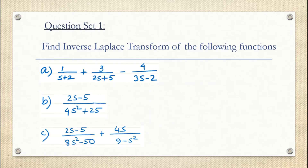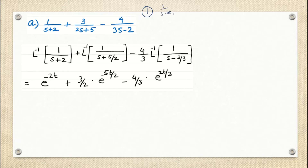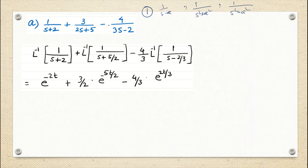The first question is to find the inverse Laplace transform of 1/(s+2) + 3/(2s+5) − 4/(3s−2). The question is given in the s-domain and the final answer will be in t. Step one: look at the question and determine which set each term belongs to. All three terms fall under set one — the 1/(s − a) form. Step two, which we'll discuss, handles coefficients on s.